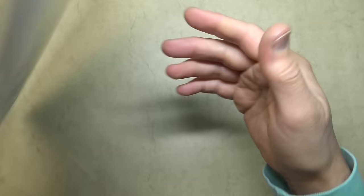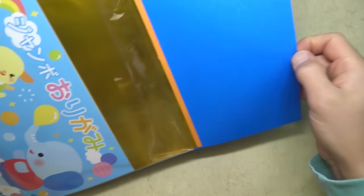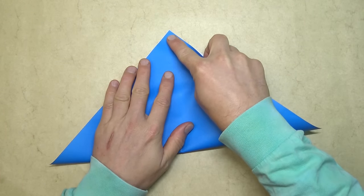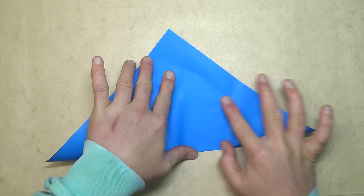Alright, so for this model, I'm going to use a 10-inch square of Kami. But you could use a sheet of printer paper cut square. Begin white side up, and fold diagonally in half. As always, try to make really precise folds, and crease sharply.